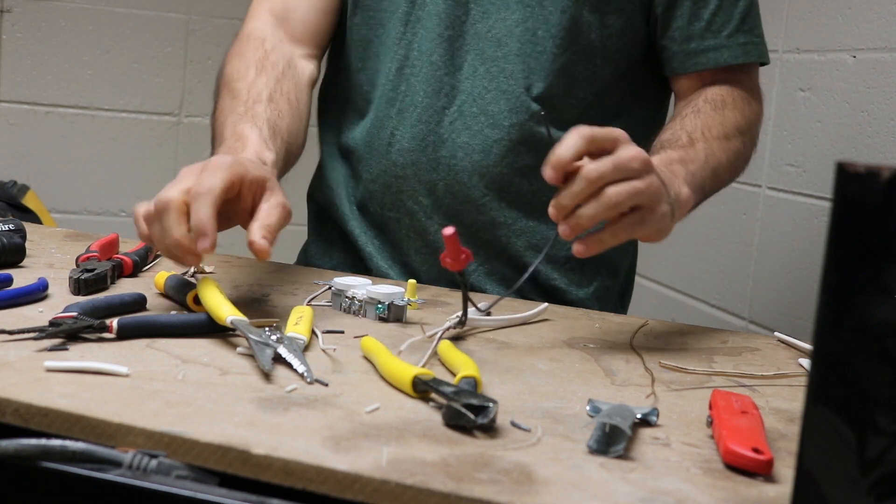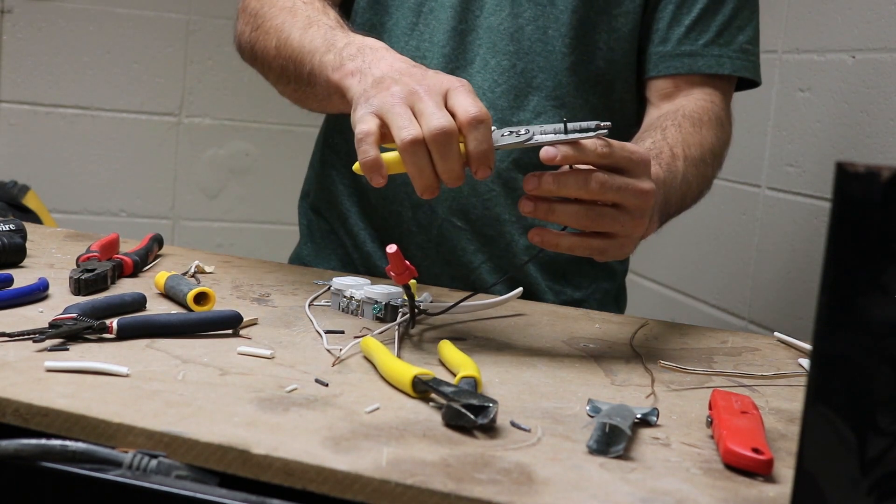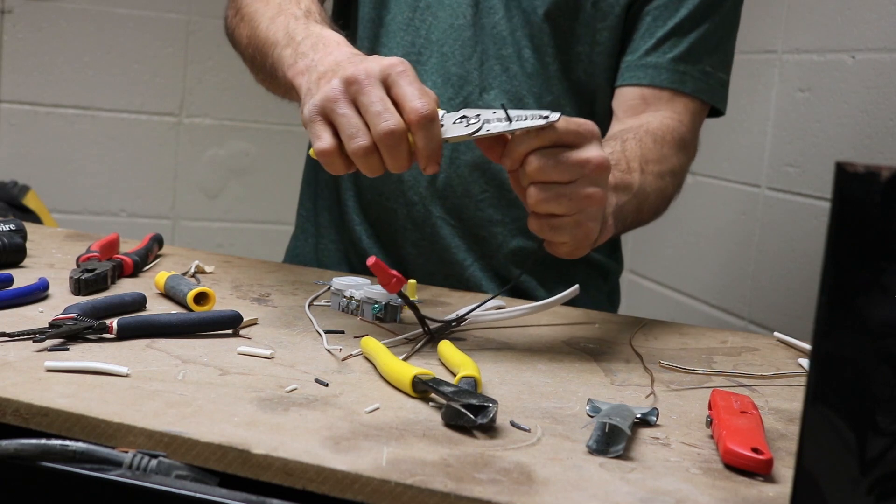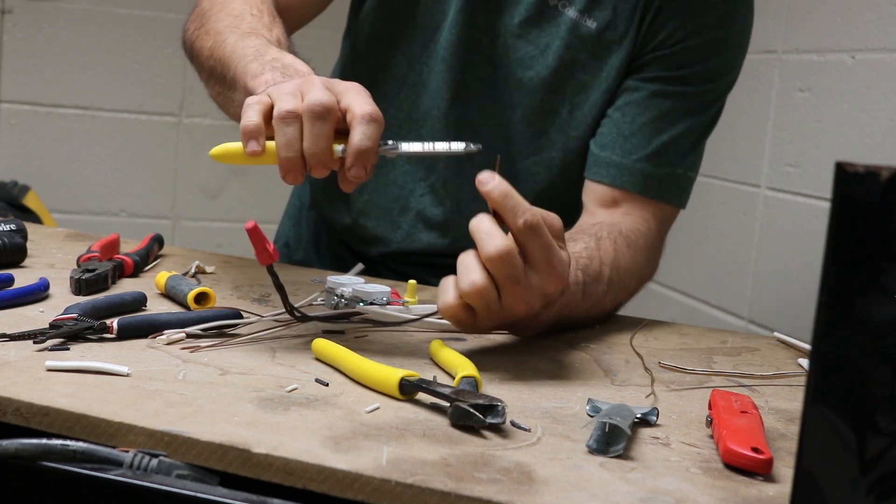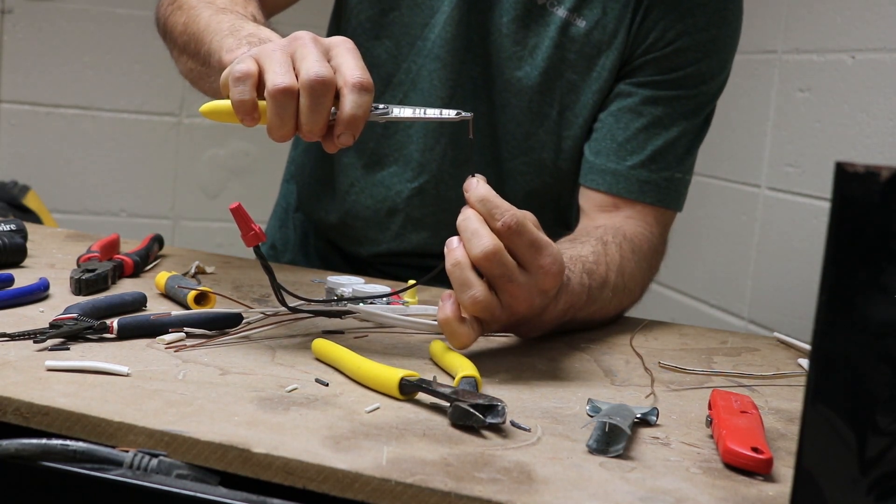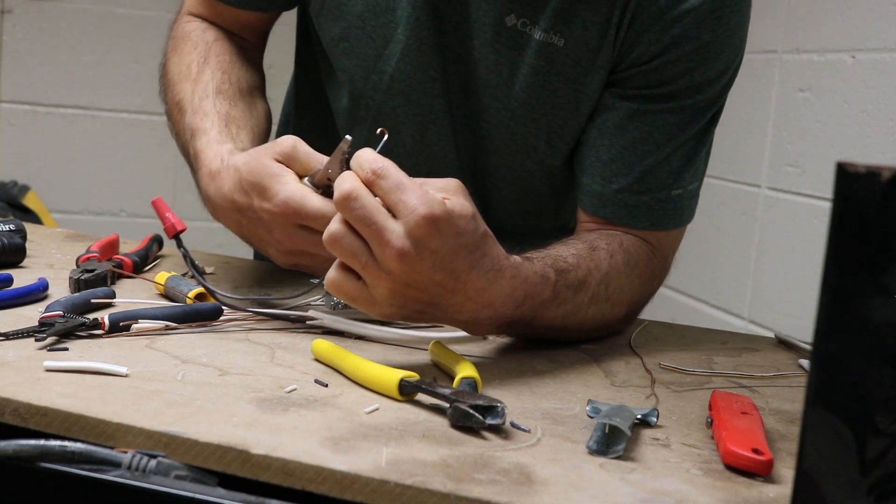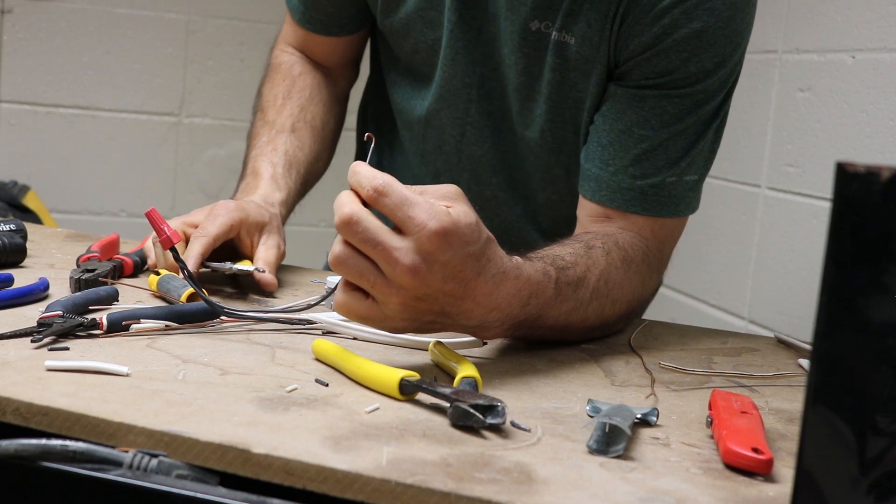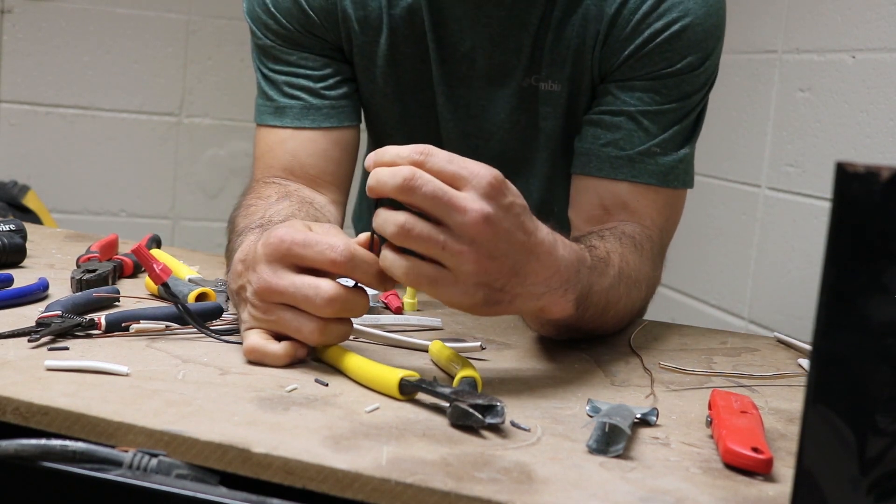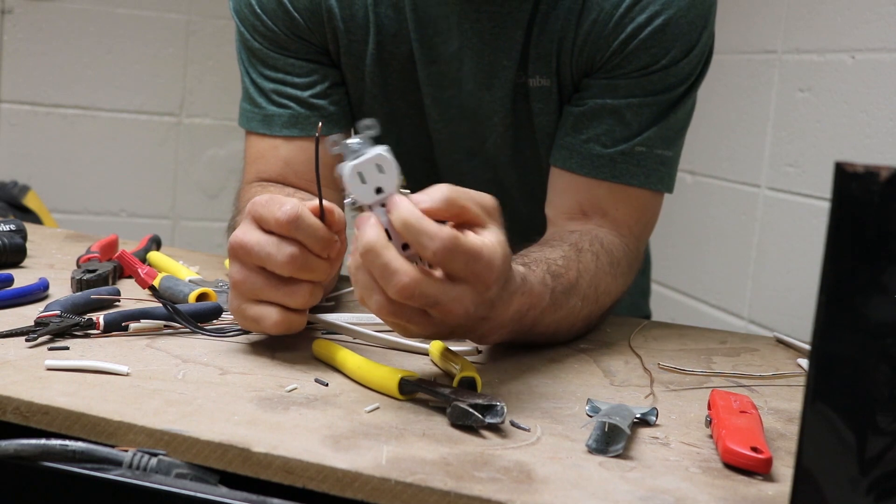You're going to take that jumper. You're going to strip about three-quarters of an inch off like so. You're going to bend a hook like I showed you before. You grab it at the top and you just roll it over to make a nice small hook. That hook will attach to the gold screw on your terminal.